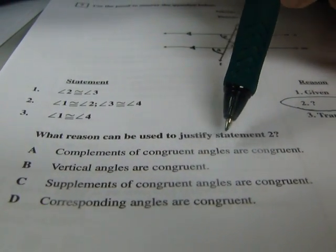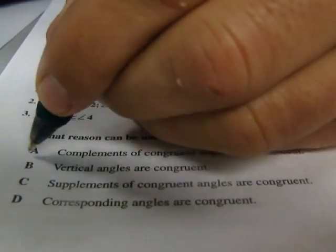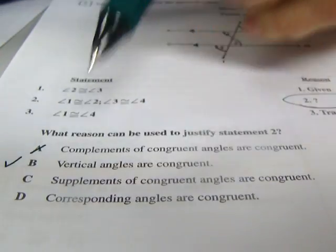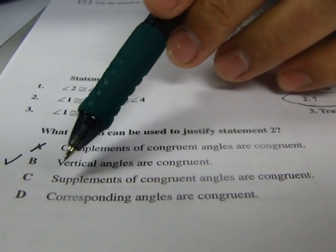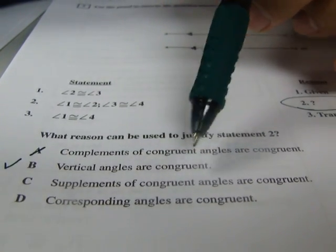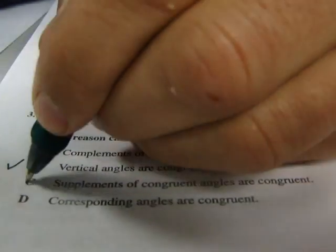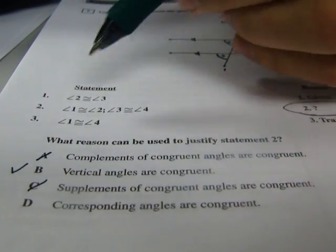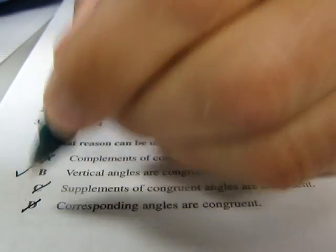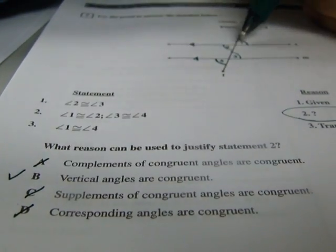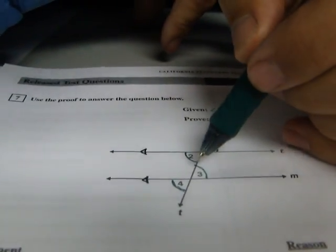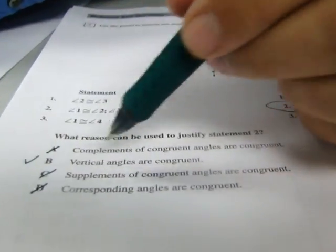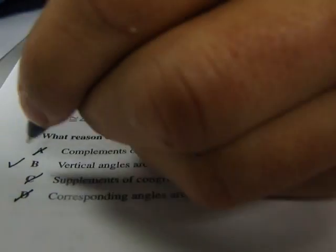Complements of congruent angles are congruent, not relevant. Vertical angles are congruent. That sounds right. Let's just check the others to see if there's something better. Supplements of congruent angles are congruent, not relevant. Corresponding angles are congruent, also not relevant, considering the statement. The statement says one and two. One and two are congruent because they're vertical angles. Three and four are congruent because they're vertical angles. Therefore, vertical angles are congruent is our answer, B.